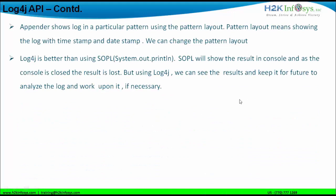It is better to use the Log4j API than using System.out.println (SOPL). The reason is that once the console is closed, information printed in the console via System.out.println gets lost. But log information created with Log4j will not get lost — it will be available at the path where the logging file is created. These logging results can also be further analyzed in the future to understand the root cause of failure or success.